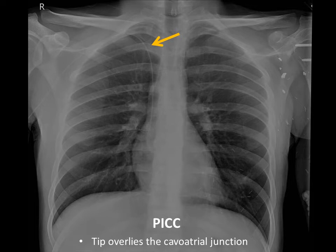Here's a good example of a PIC that's been placed. On the right side, we can see it coming from the peripheral venous system, going through the axillary vein and the brachiocephalic, down into the superior vena cava, and terminating at the cavo-atrial junction. We notice that this line is thinner than central lines, which makes sense because it has to go through peripheral veins with a more narrow lumen. Similarly, you just want to make sure it's in the right place and you don't see any iatrogenic processes.